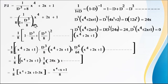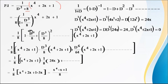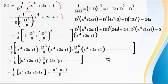Now find the particular integral: PI = 1/(D³ + 8) · (x⁴ + 2x + 1). Take the least degree term (constant 8) common: 1/8 · 1/(1 + D³/8) · (x⁴ + 2x + 1). This is now in the form 1/(1 + φ(D)), so expand as 1 − (D³/8) + (D³/8)² − ... giving 1 − D³/8 + D⁶/64 − ... into (x⁴ + 2x + 1).